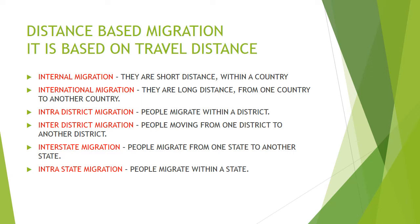There is also interstate and intrastate migration. Interstate migration means people migrate from one state to another — for example, people migrating from Maharashtra to Karnataka. Intrastate migration means people migrate within a state — for example, people migrating from Pune to Mumbai within Maharashtra state. These are the key concepts of distance-based migration.